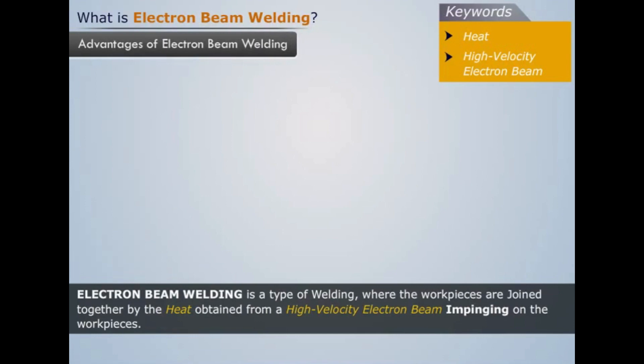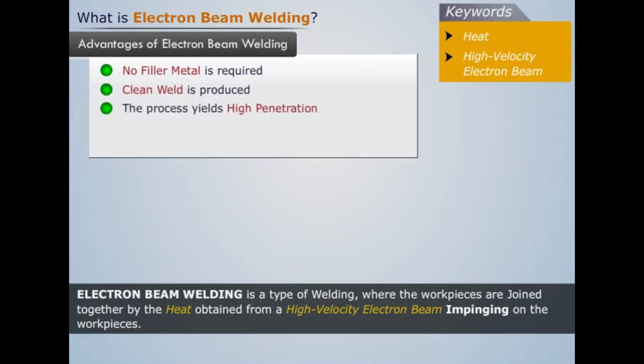Some of the main advantages of electron beam welding are as follows: No filler metal is required. Clean weld is produced. The process yields high penetration. Penetration can be easily controlled by accelerating beam voltage, beam current, and beam focus.